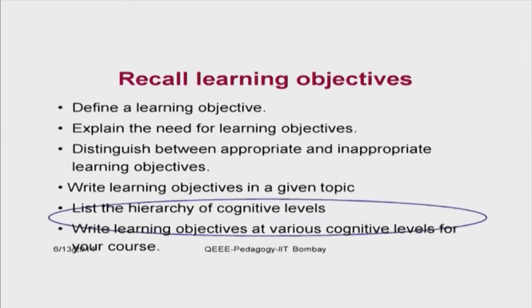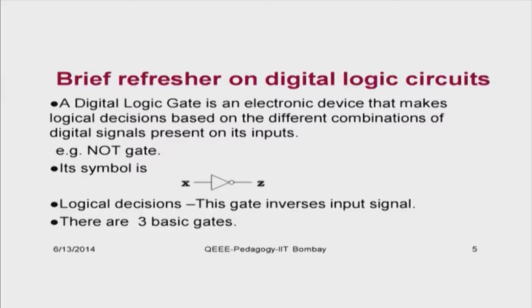For this session, you will be able to list the hierarchy of cognitive levels and write learning objectives at various cognitive levels. The example topic used again is digital logic circuits — an electronic device able to take logical decisions. Basic gates are given as examples. Today's examples also come from this same topic.